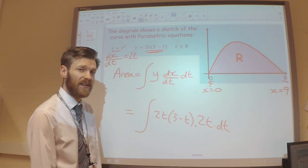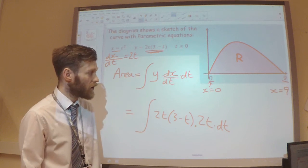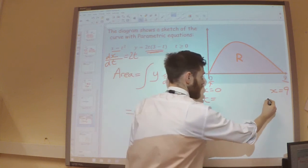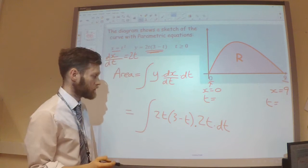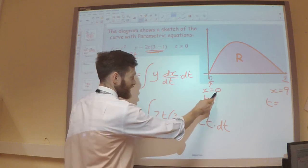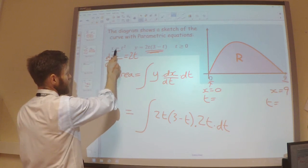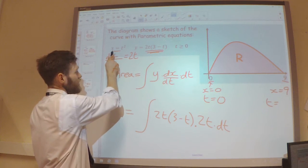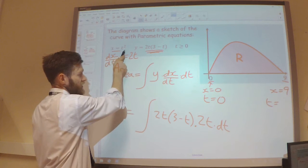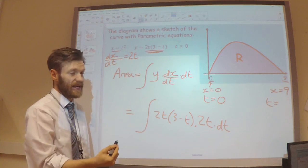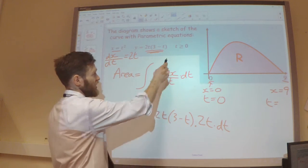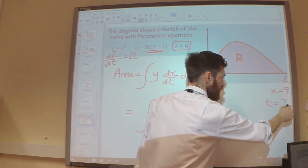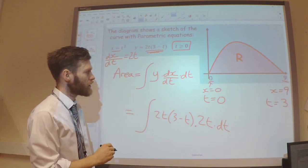Just in the same way as when we changed the limits when we did integration by substitution, we have to change the limits here. We need to work out what are the values of t at those points. When x is 0, then t is going to have to be 0. When x is 9, so 9 equals t squared, then t would have to be either plus 3 or minus 3. But we know t has to be greater than or equal to 0, so that means when x is 9, t is going to be 3.